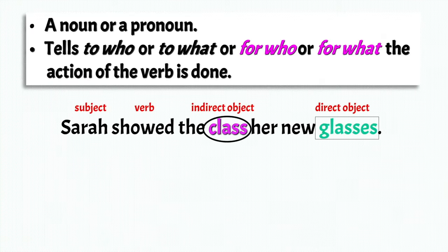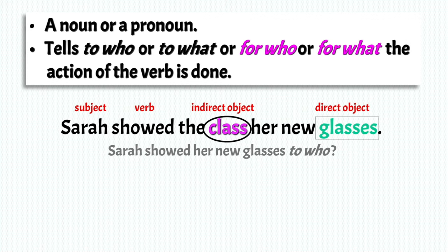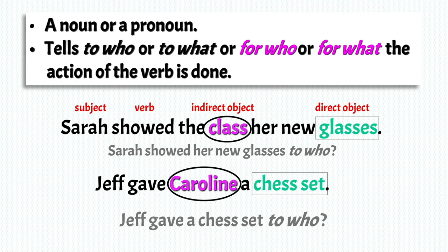Another example: Sarah showed the class her new glasses. So the class is your indirect object and glasses would be your direct object. You would ask Sarah showed her new glasses to who? To the class. Similarly, Jeff gave Caroline a chess set. Jeff gave a chess set to who? To Caroline — that's your indirect object.